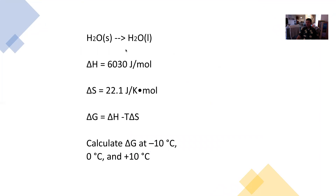Consider water in its solid form converting into water in its liquid form — essentially an ice cube melting. For that process, delta H equals 6,030 joules per mole and delta S equals 22.1 joules per Kelvin times mole. Using delta G equals delta H minus T delta S, calculate delta G at negative 10 degrees Celsius, zero degrees Celsius, and positive 10 degrees Celsius. Temperature always has to be in Kelvin, so make sure you convert. Think about it: does ice melt at negative 10, at zero, or at positive 10 degrees Celsius? Your answer should sync up with common sense.